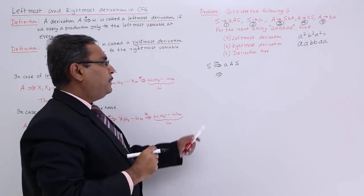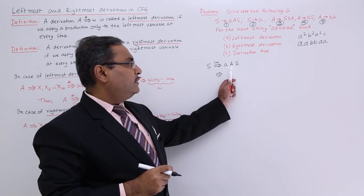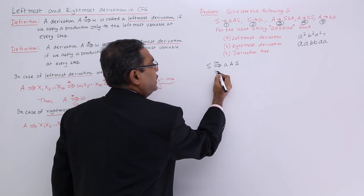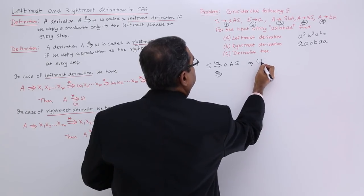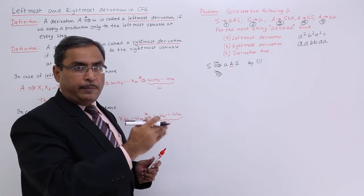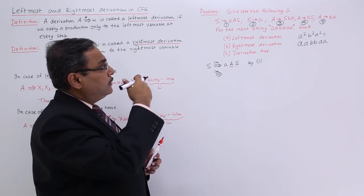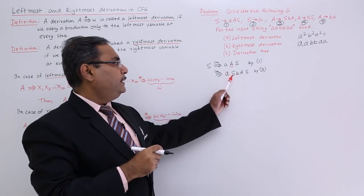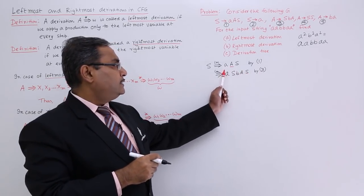In this sentential form, from the left-hand side, the first non-terminal is capital A. So in case of leftmost derivation, I shall go for capital A — that is by rule 1. Capital A is the first non-terminal coming on the left-hand side in the sentential form, so from there I apply the next production rule. From A, I am getting SBA — that is production rule number 3. And this A is there and this A is there.